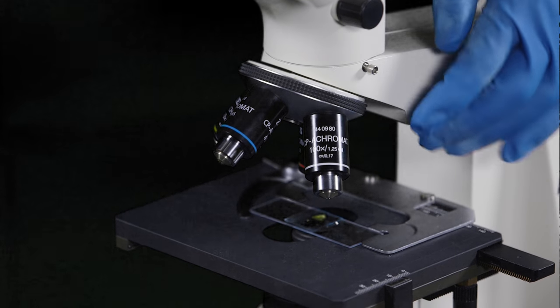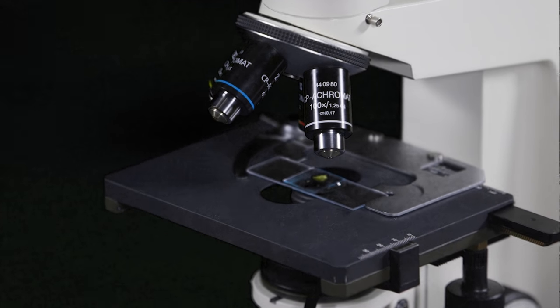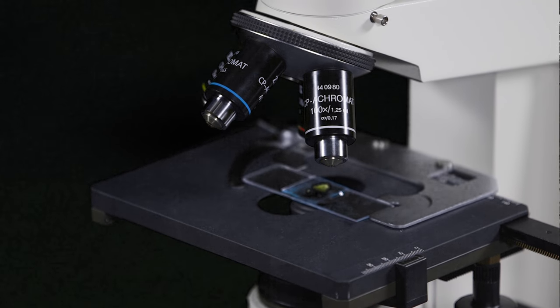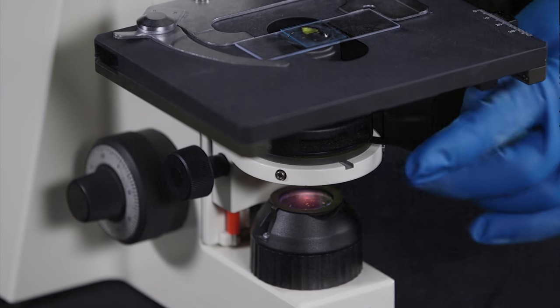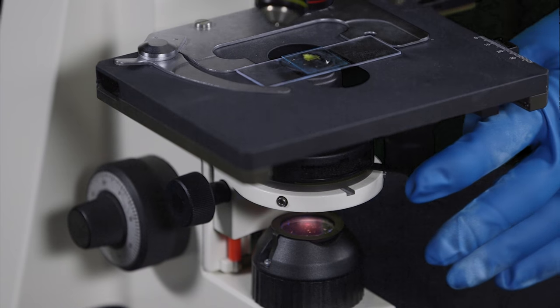Rotate the turret until the lowest power objective is above the specimen. It will click into place. Pull the iris diaphragm lever all the way closed and then slightly open it.